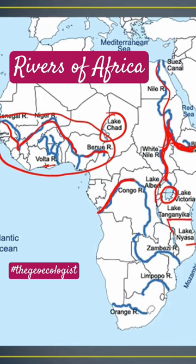Here is the biggest river — the Congo River system. Then you have the Zambezi River system down south. Also, one important river is the Limpopo River, which forms a boundary between South Africa and the adjoining country Botswana. And here you have the Orange River, the most famous river of South Africa.